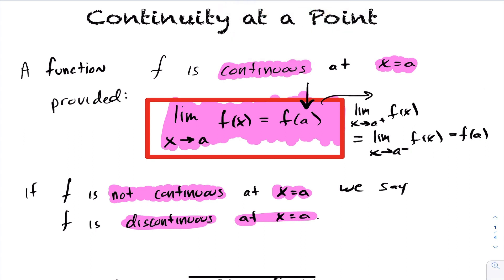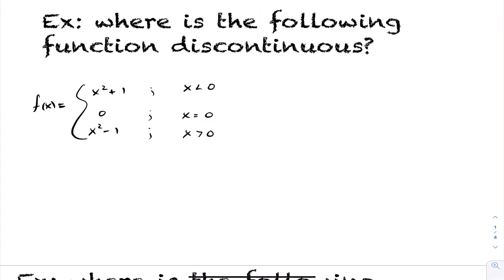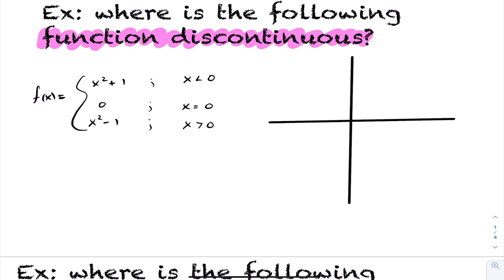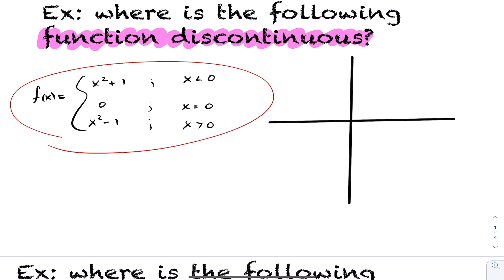Let's take a look at some examples. For this first example, they want to know where is the following function discontinuous. To tackle this, let's first graph this piecewise function. In the top piece, we have a quadratic with vertex at (0, 1), and this is defined when x is less than 0. So this is x squared plus 1 for x less than 0.